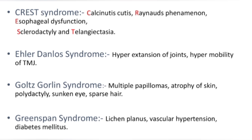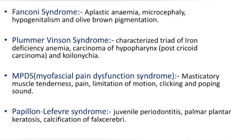Grinspan syndrome — this particular syndrome is very important. It is characterized by lichen planus, vascular hypertension, and diabetes mellitus. Fanconi syndrome: aplastic anemia, microsaveli, hypogenitalism, and olive-brown pigmentation.